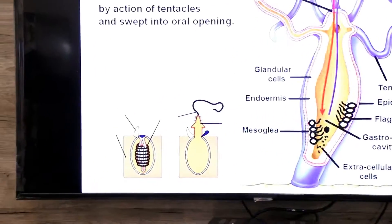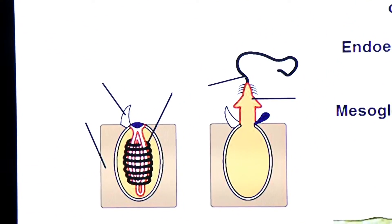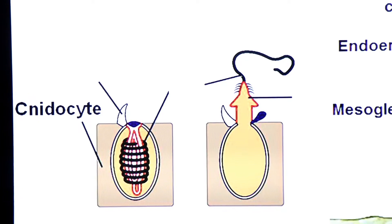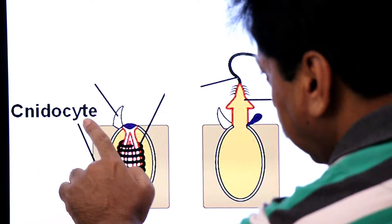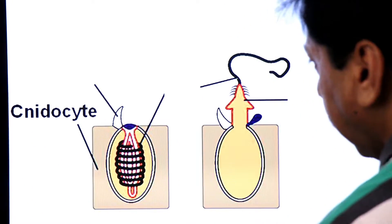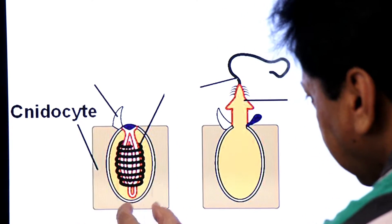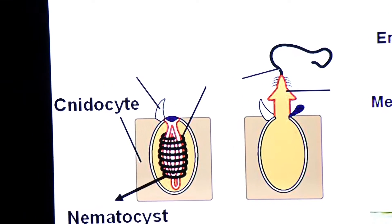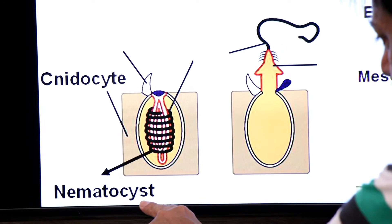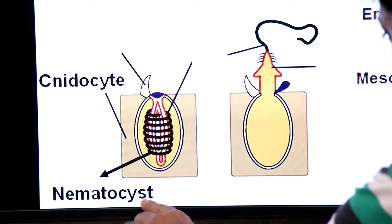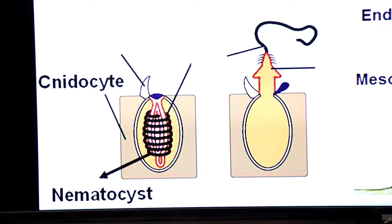The cells of the tentacles are known as nidocytes. Nidocytes are stinging cells found around the tentacles and near the mouth. Inside nidocytes, there are stinging capsules called nematocysts, which are organs of offense and defense used to sting the prey.